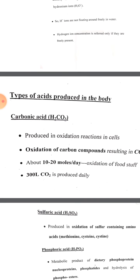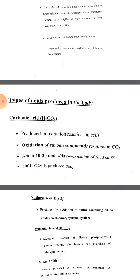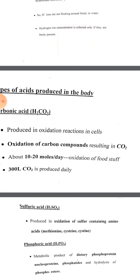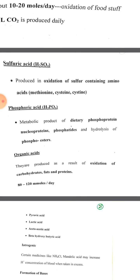Acids produced in the body include inorganic and organic acids. The first inorganic acid is carbonic acid (H₂CO₃), formed by the reaction CO₂ + H₂O → H₂CO₃ via the enzyme carbonic anhydrase, which requires zinc for activation and is inhibited by acetazolamide. This acid is produced from oxidation reactions generating CO₂; approximately 10–20 moles per day are produced, with total CO₂ output reaching 300 liters daily. The second inorganic acid is H₂SO₄, produced from oxidation of sulfur-containing amino acids like cysteine and methionine.